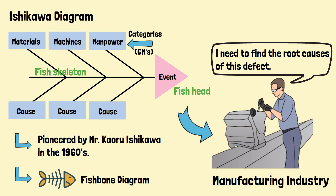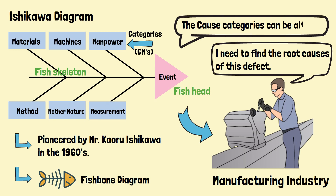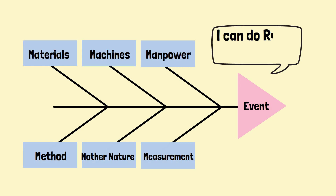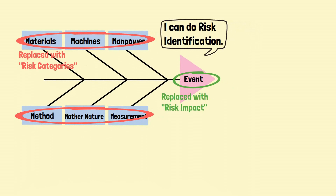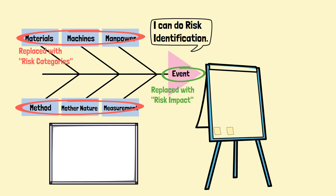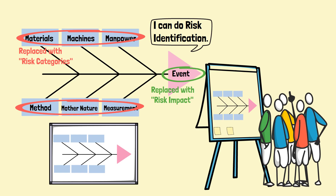The categories can be changed based on the requirements. The structure of the Fishbone Diagram can be used for risk identification. This can be done by replacing the event and categories of causes with impact and risk categories respectively. What is needed in the risk identification session is a whiteboard or flip chart and sticky notes. The fishbone structure is first printed on the flip chart, then the participants can use post-it notes to put the risks onto the diagram.